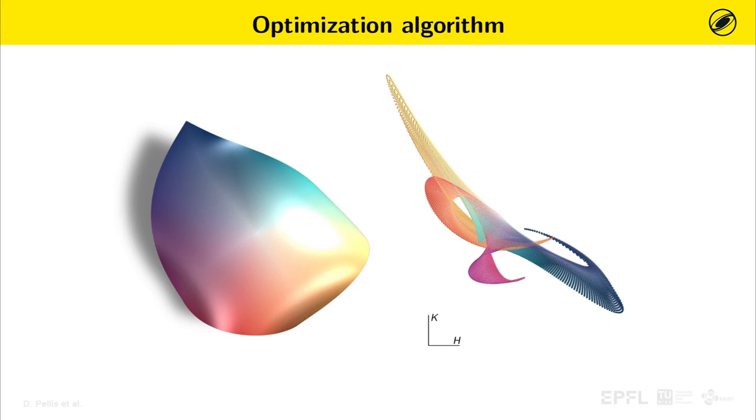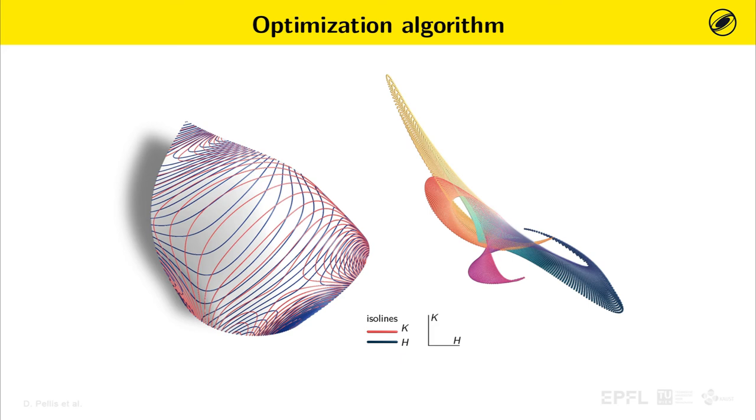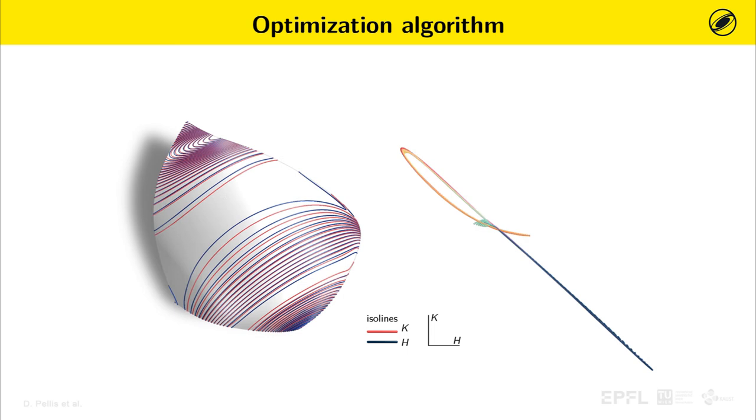Our optimization starts from a given B-spline surface. On the right, we can see the curvature diagram in the hk plane. We enforce the alignment of mean and Gaussian curvature isolines. As the optimization proceeds, the hk relation emerges spontaneously.